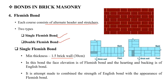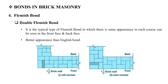The single Flemish bond is used as a face elevation, using Flemish bond for its better appearance when forming walls. The double Flemish bond is used in both English bond and Flemish bond configurations.